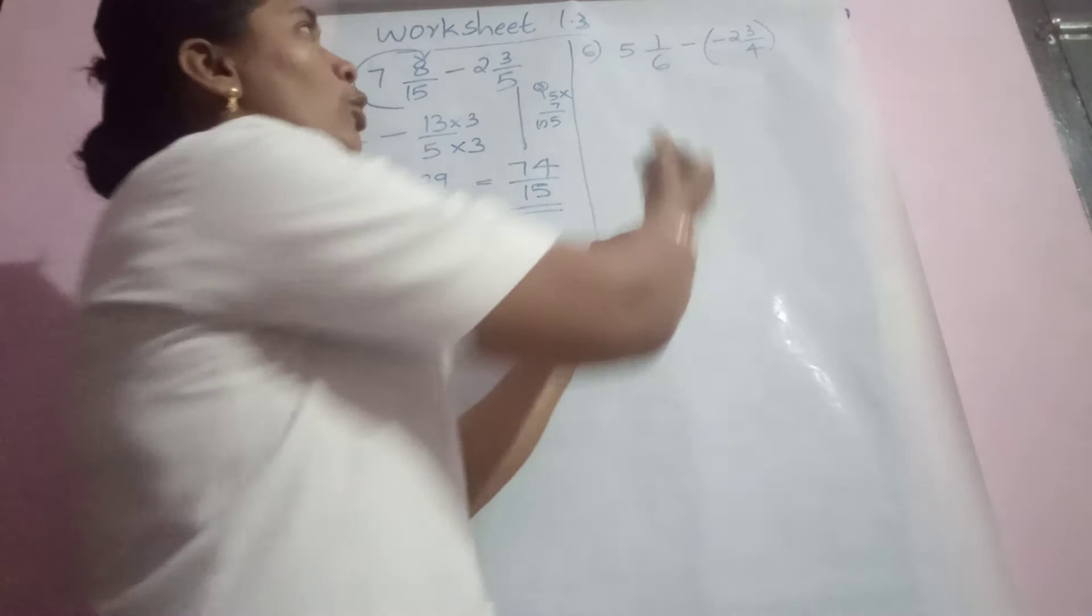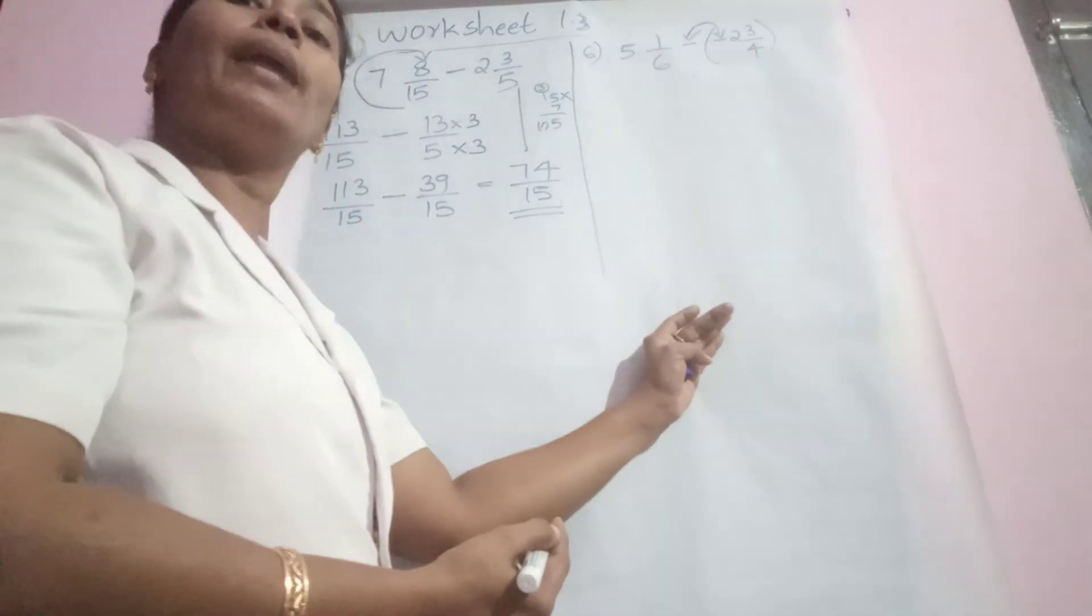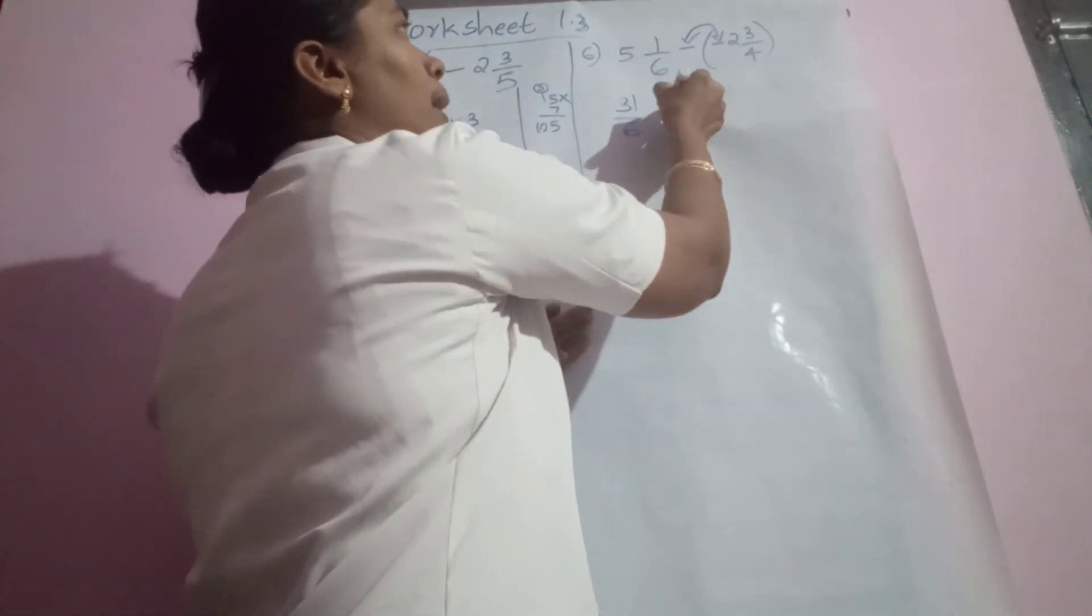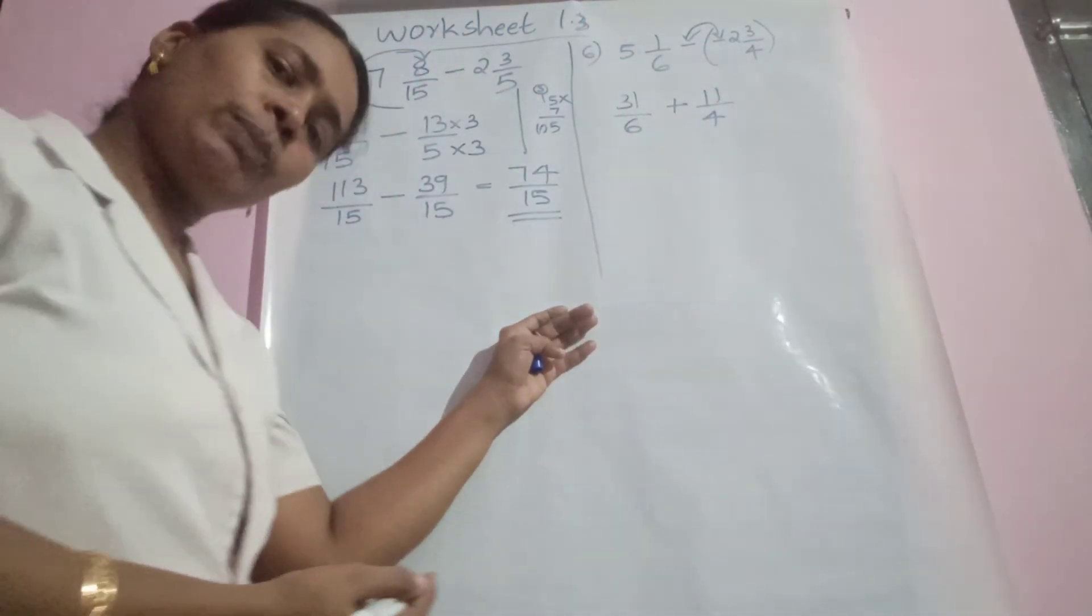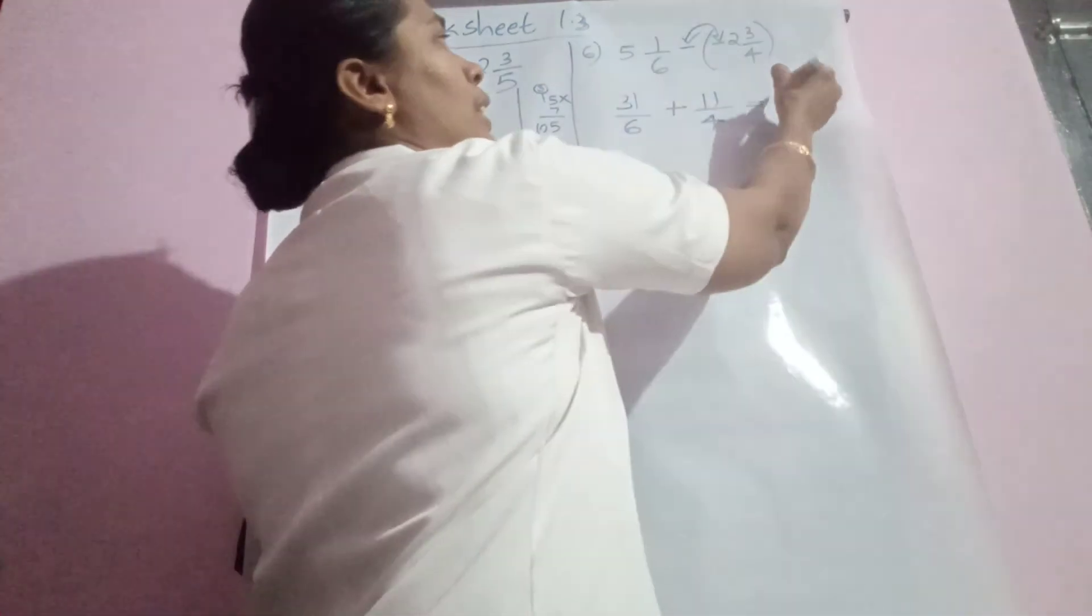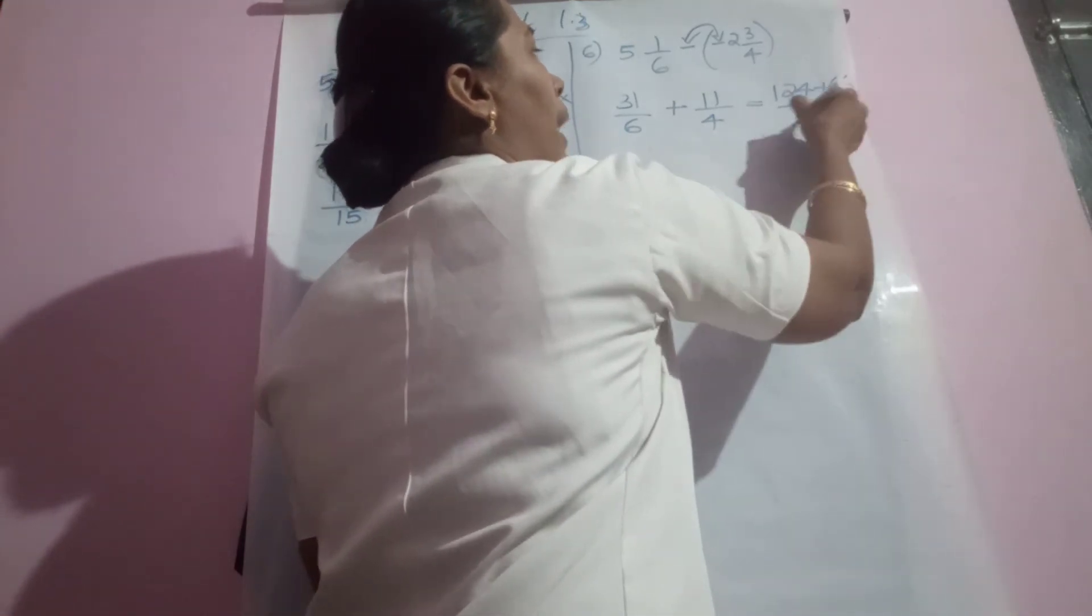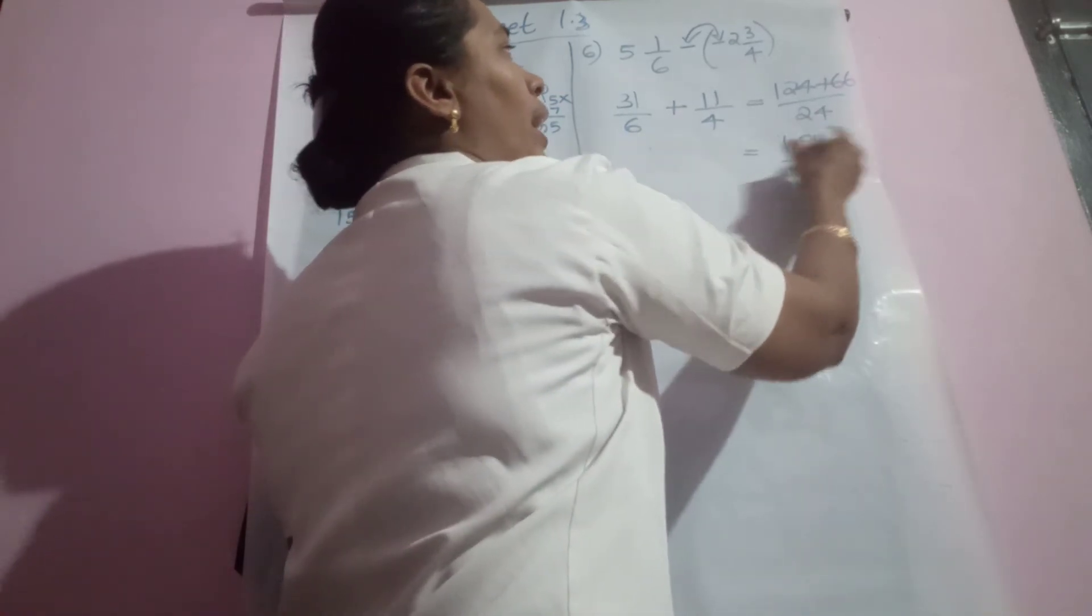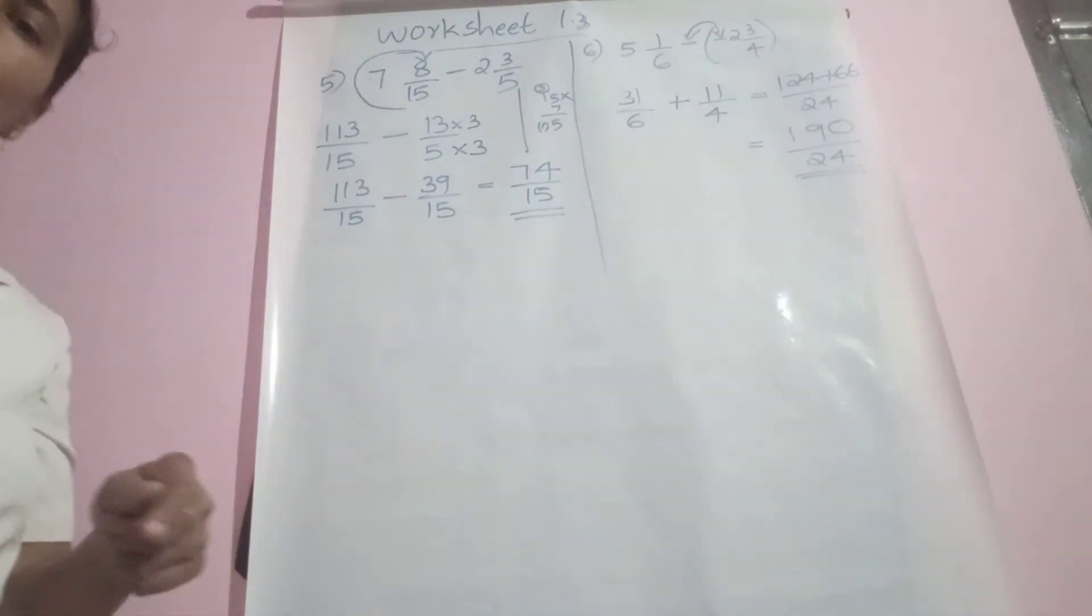Same type of question. Before opening, negative becomes plus. So the first one, how can we write? 31/6 plus 11/4. Small numbers, let them cross multiply. 124 plus 66 by 24. Add the numbers: 0 then 9 and 1, 190/24.